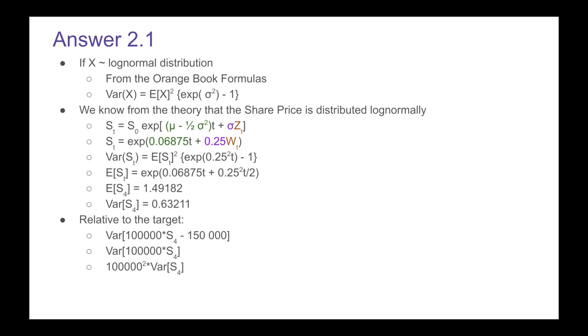We basically go through these two steps and we've got that 100,000 squared times the variance of S4. We know what the variance of S4 is because we've just calculated it. If we want to figure out the standard deviation, we're going to take this expression, take the square root of it, and we see that we get our final answer of 79,505 euros.